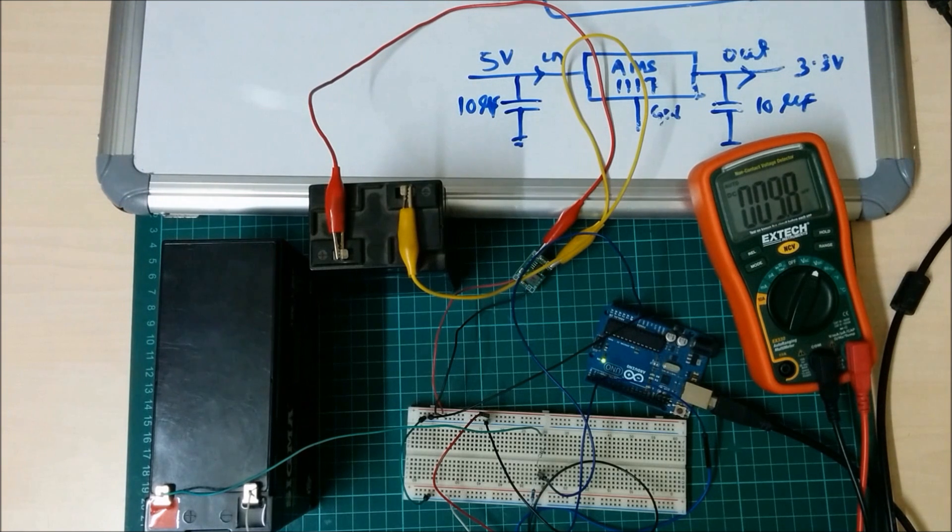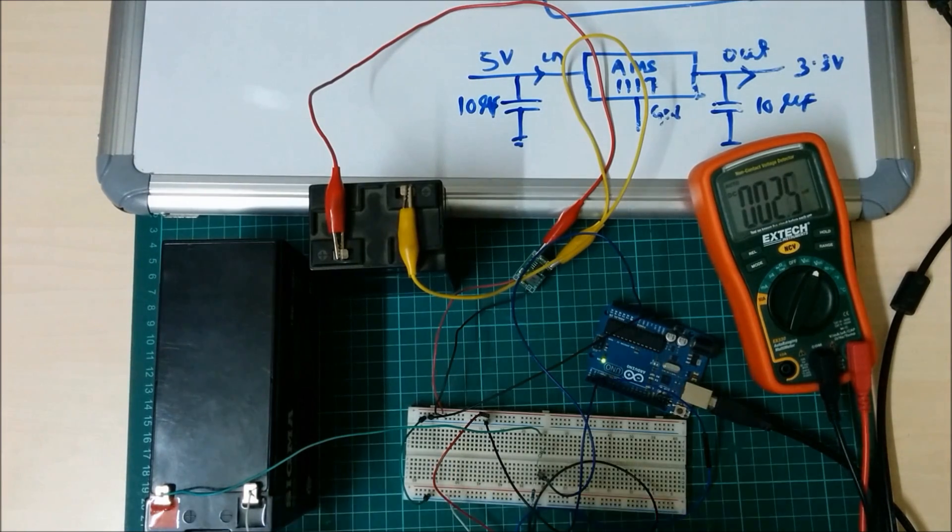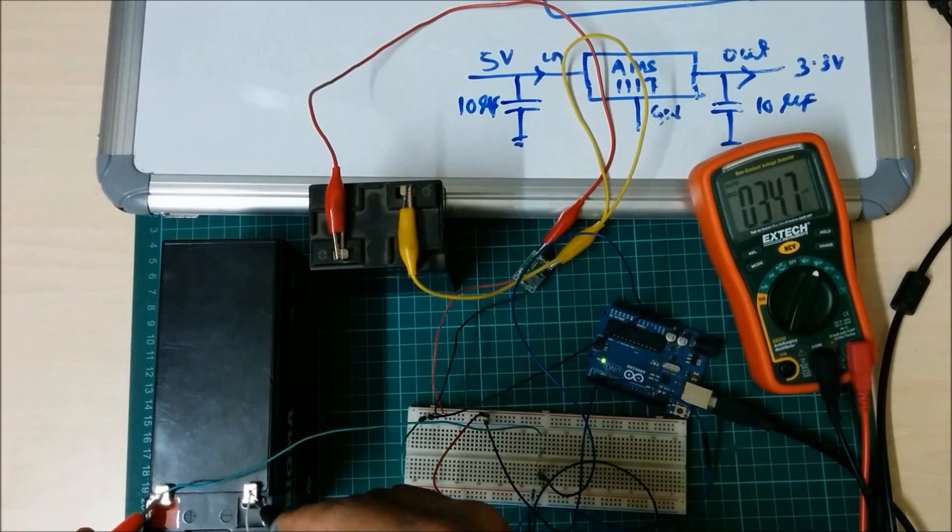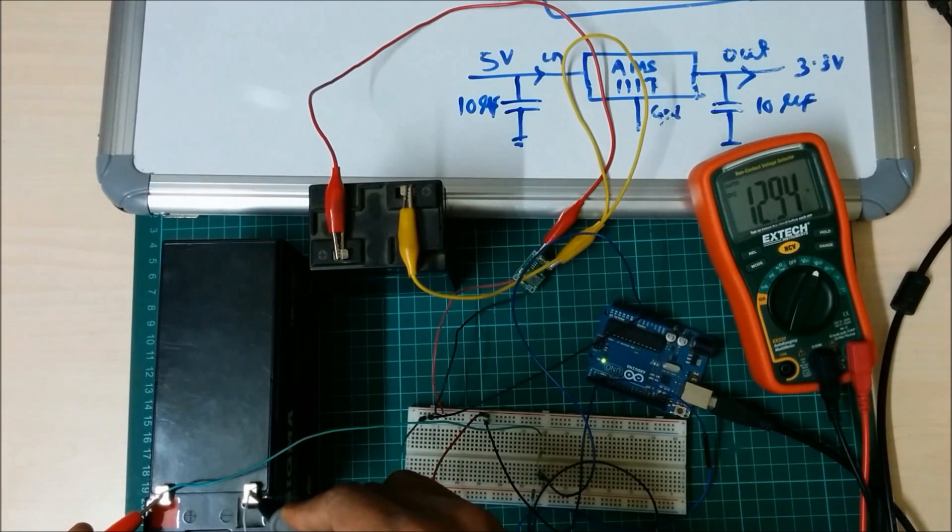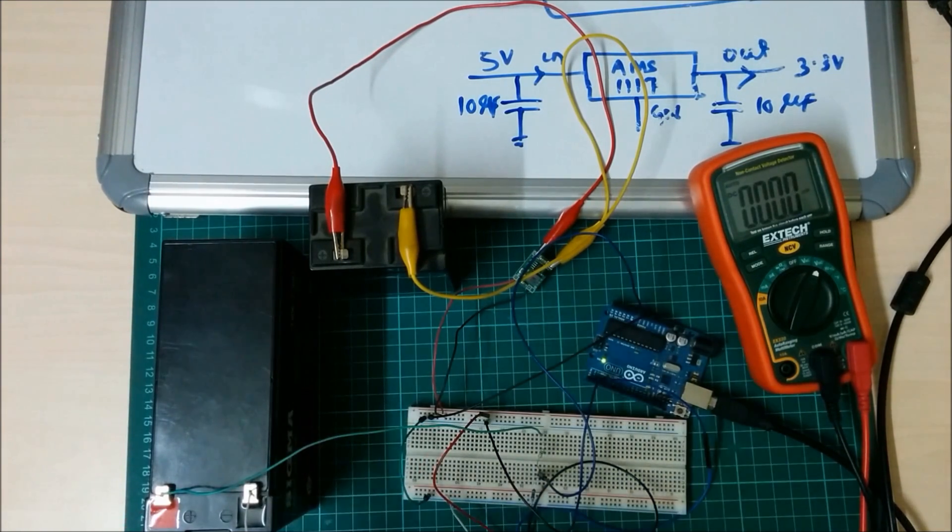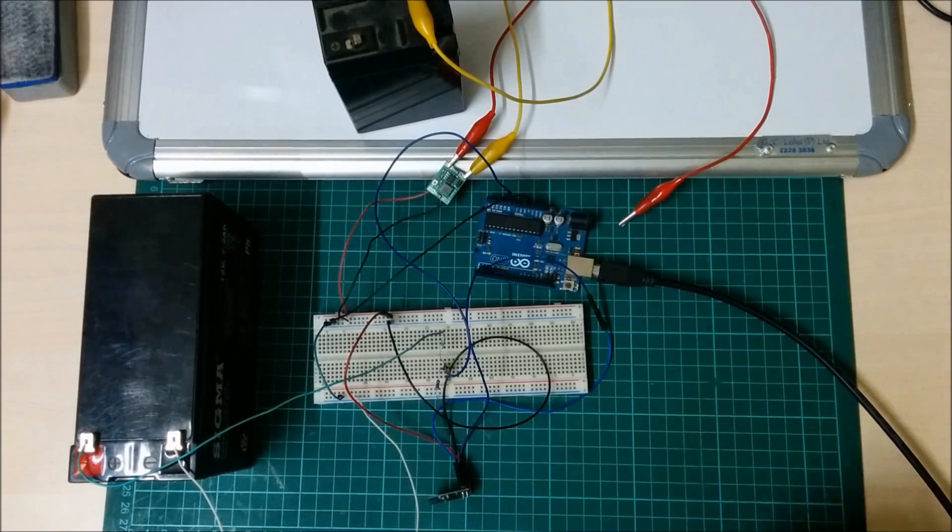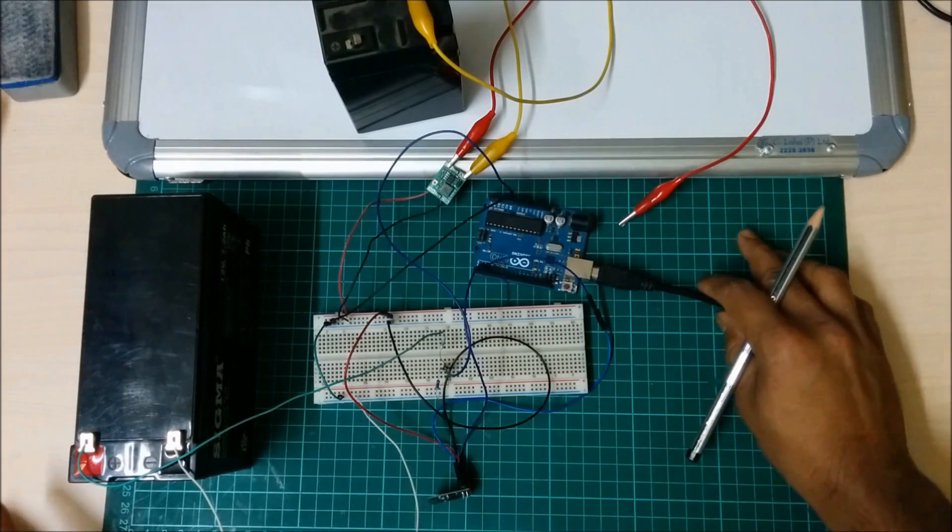Before going to upload the program, first I measure the battery voltage by using my multimeter. It's around 12.94V. As per schematic, I have connected everything. You can see.